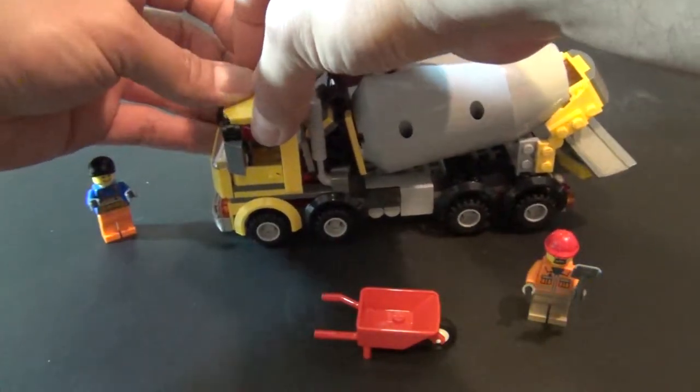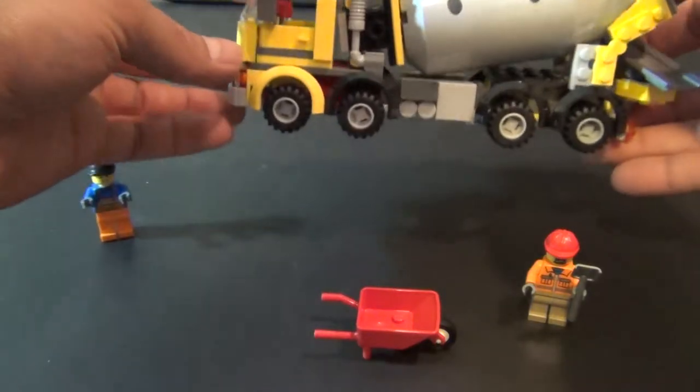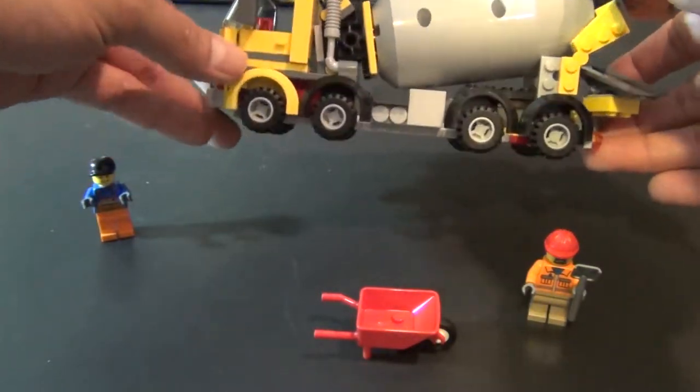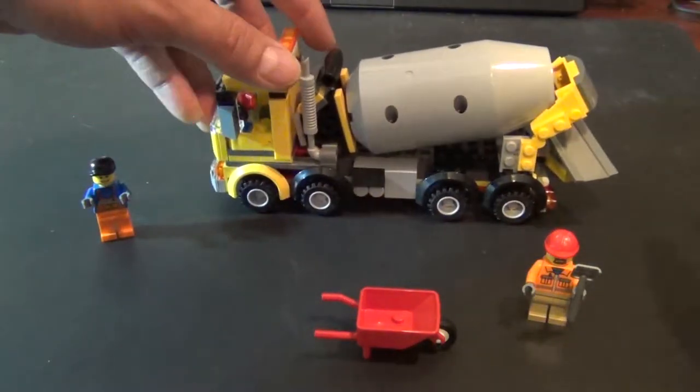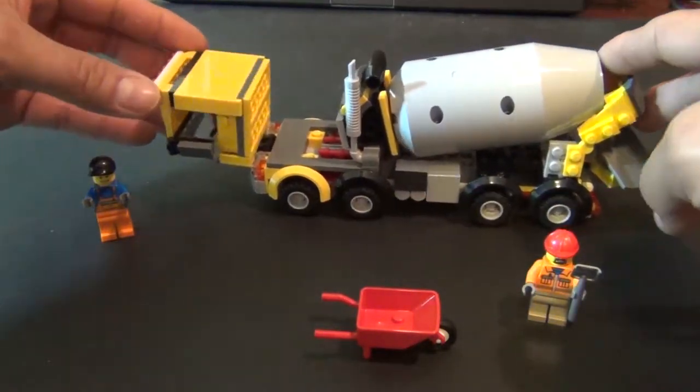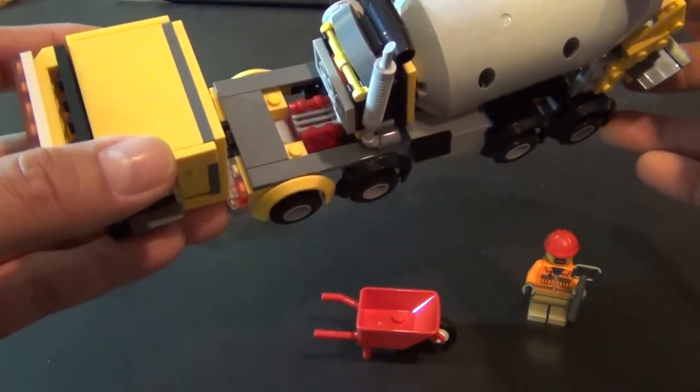So let's look at this set. It's a quad axle truck. So it's got eight wheels. The front cab tips up. And you can see a little fake engine in there.